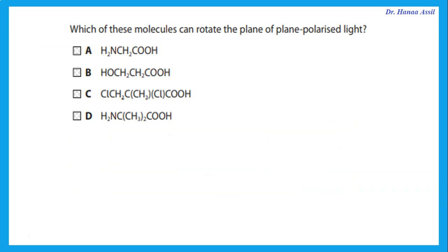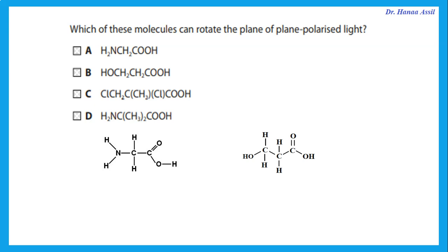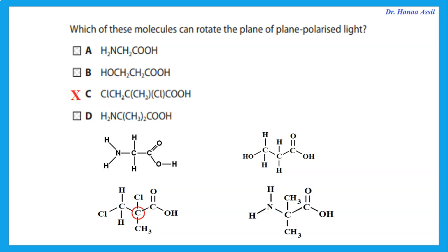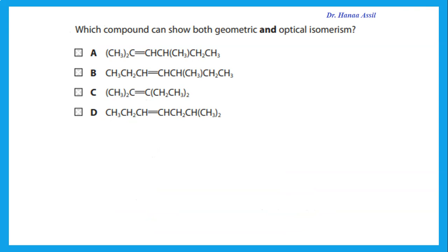A racemic mixture contains equal amounts of both enantiomers of a chiral molecule, so there is no net effect on polarized light. If a question asks which molecule can rotate the plane of polarized light, in order to do so, it must have a chiral center — that means a carbon bonded to four different groups. Compound B has a chiral center where the carbon is bonded to four different groups, so this is the one that would rotate plane-polarized light.